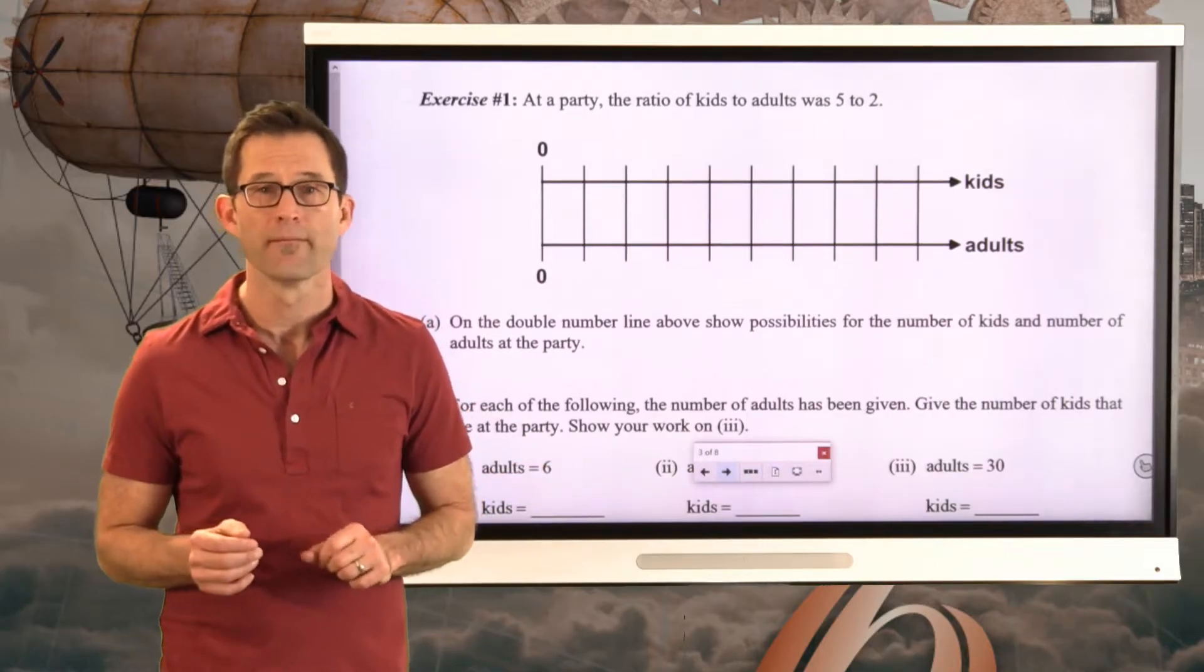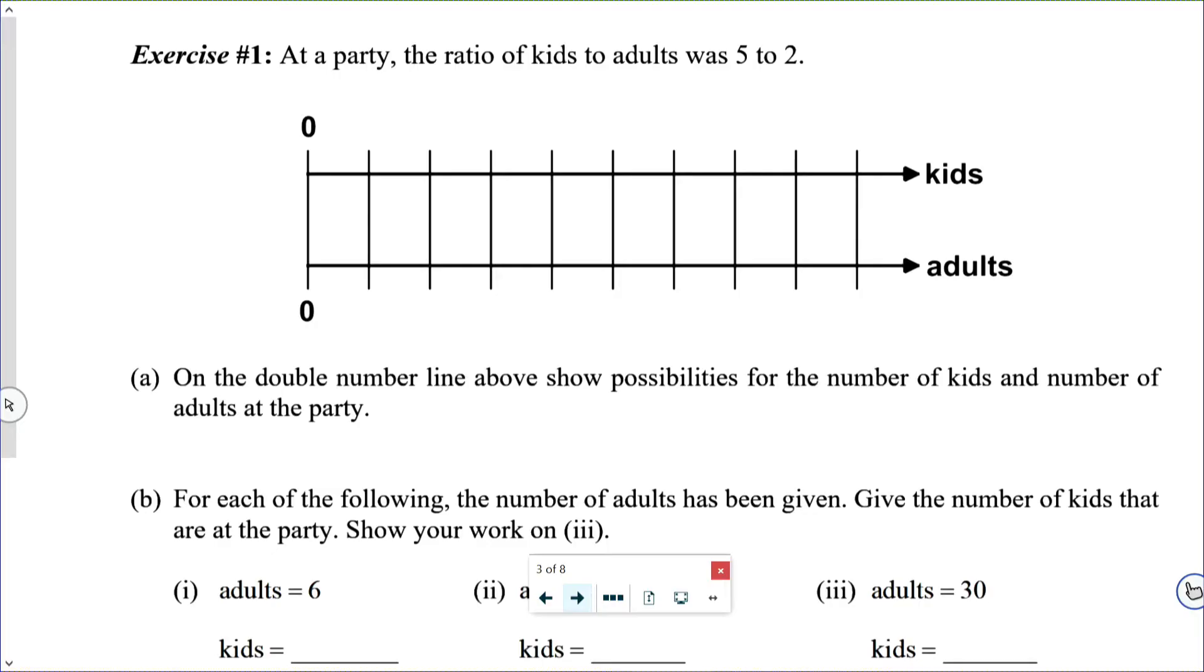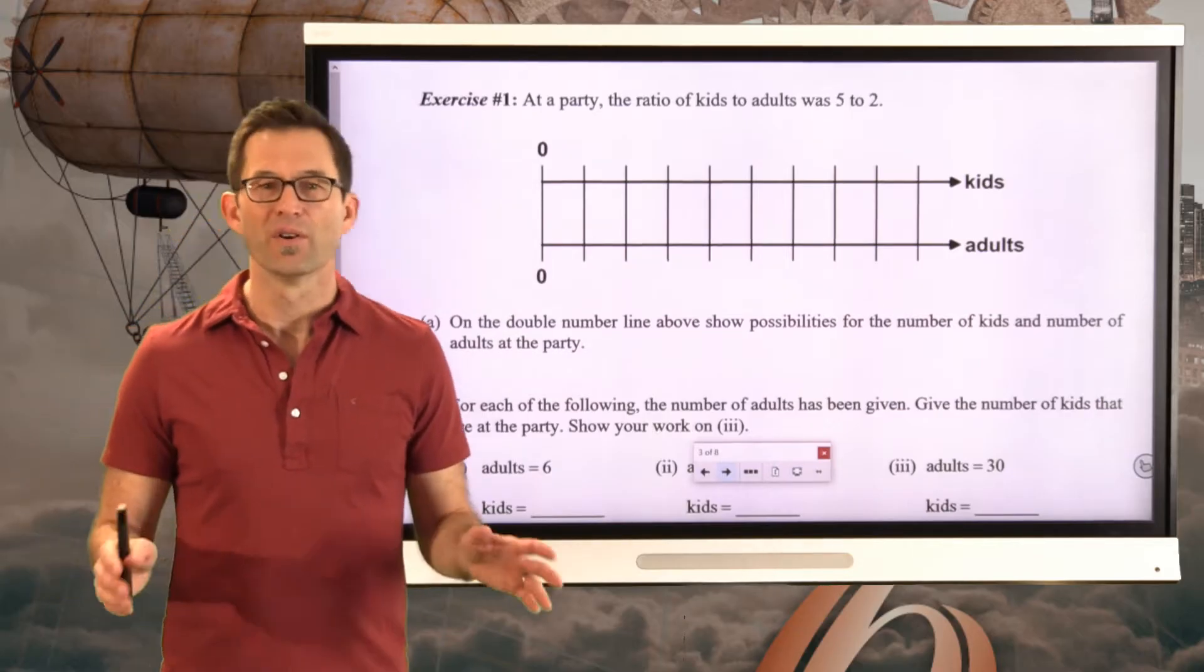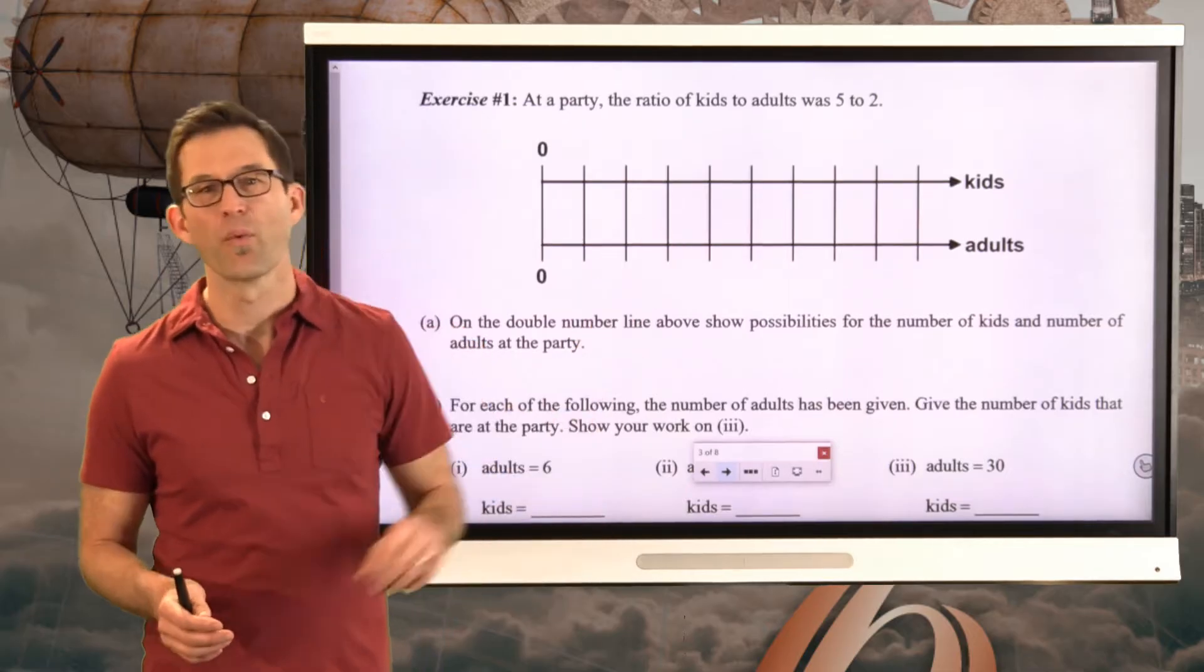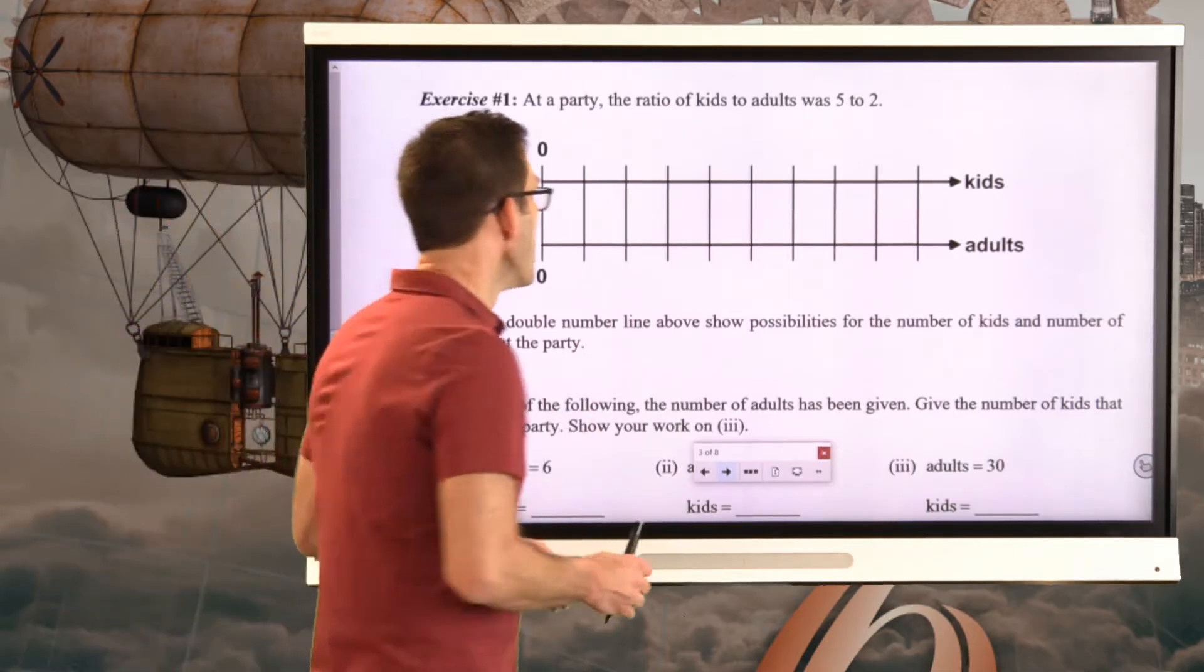Exercise number one. At a party, the ratio of kids to adults was 5 to 2. Letter A says on the double number line above, show possibilities for the number of kids and the number of adults at the party. And again, this is very similar to tables. In fact, one might say it's just a different way of visualizing the table.